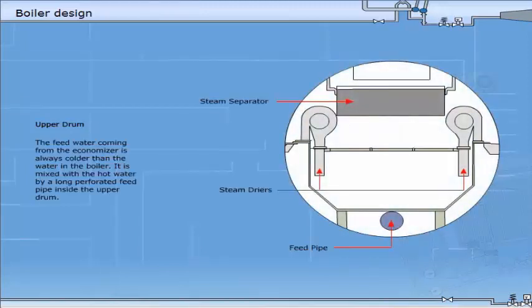The feed water coming from the economiser is always colder than the water in the boiler. It is mixed with the hot water by a long perforated feed pipe inside the upper drum.